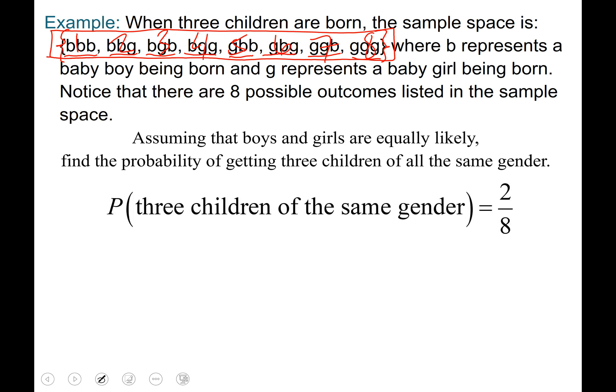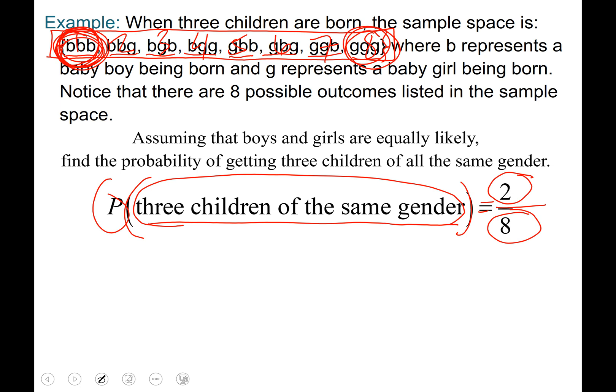Assuming that boys and girls are equally likely, find the probability of getting three children of all the same gender. Okay so we denote that as P open parentheses three children of all the same gender close parentheses equals a fraction. Our denominator of eight comes from the total number of possibilities and our numerator of two comes from the number of successes. Whatever is written inside the parentheses is considered a success. So three children of the same gender. So we had a success right here with boy boy boy and a success right here with girl girl girl. So that is two successes, that's why it's two out of eight.